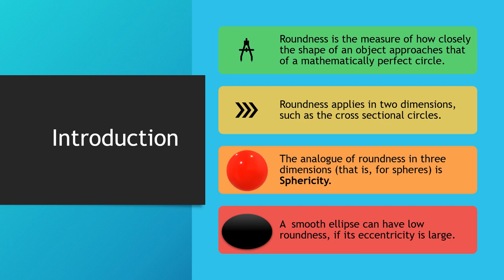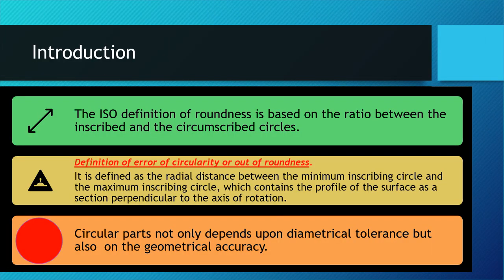Sphericity is related to spheres, which are in three dimensions. A smooth ellipse can have small or low roundness if its eccentricity is large. The ISO definition of roundness is based on the ratio between the inscribed and circumscribed circles — that is, the maximum and minimum size circles that are just sufficient to fit inside and enclose the shape.